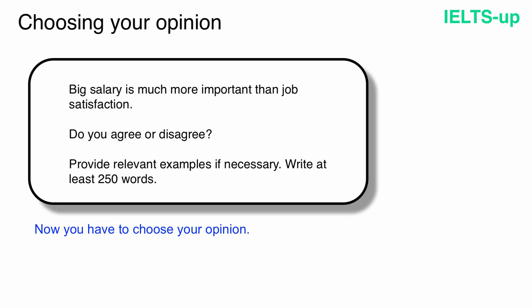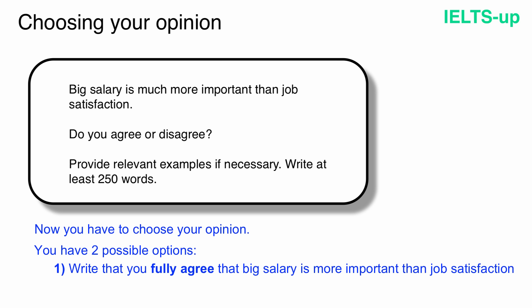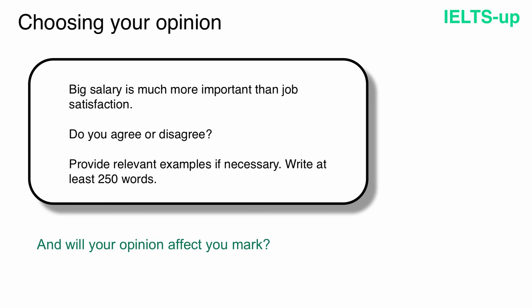Now you have to choose your opinion. Do you agree or disagree with the statement? You have two possible options. First, you can write that you fully agree that big salary is more important than job satisfaction. Or secondly, you can write that you completely disagree with that. And will your opinion affect your mark? No. While you don't use offensive language or write some very bad things, your opinion doesn't matter to the examiner.